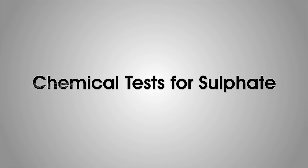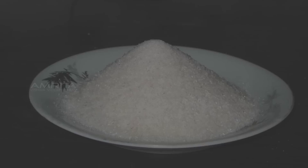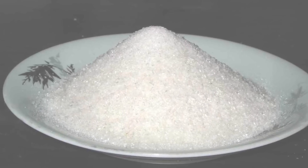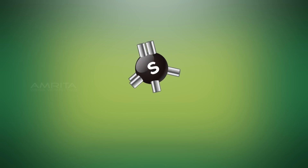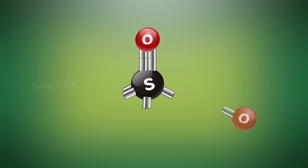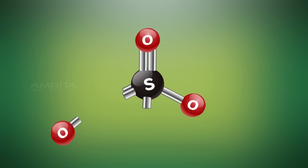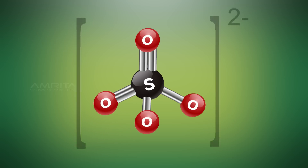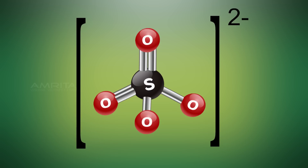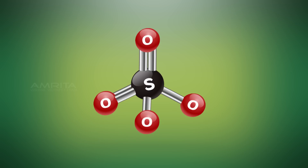Chemical Tests for Sulphate. Sulphates are inorganic salts containing sulphate ions. The sulphate ion is a polyatomic anion in which the central sulphur atom is surrounded by four equivalent oxygen atoms in a tetrahedral arrangement. In the sulphate ion, the sulphur atom is in the plus-6 oxidation state while the four oxygen atoms are in the minus-2 states.